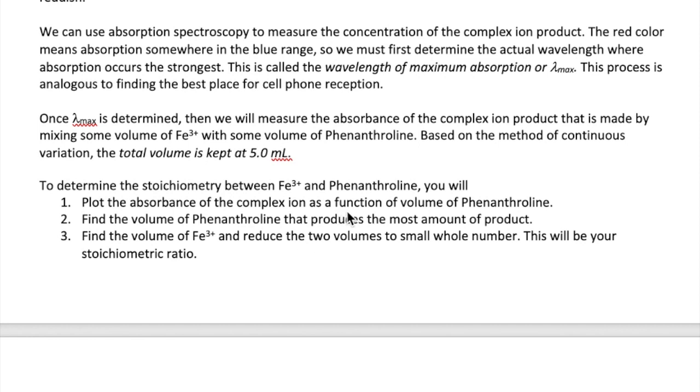determine the volumes of iron and phenanthroline that give the maximum product, and then reduce that volume ratio to small whole numbers to get the stoichiometric ratio of the two reactants. Keep going for more information. Take care everyone.